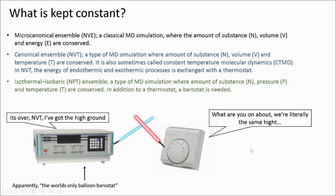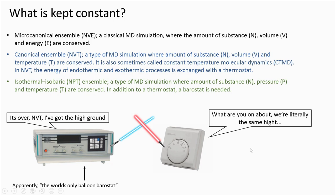There are also simulation protocols that can keep specific things in our system the same by altering different variables. You could refer to classical molecular dynamics simulation as a microcanonical ensemble or NVE for short. The NVE stands for the things that we will keep constant: the amount of substance, the volume and the total energy.